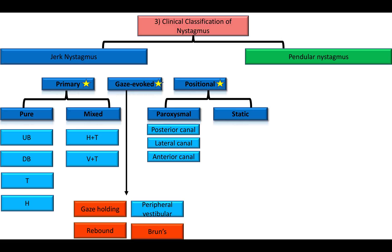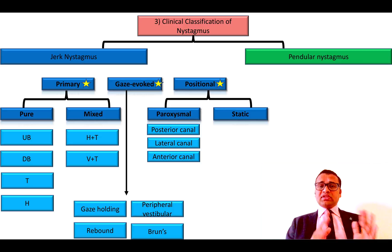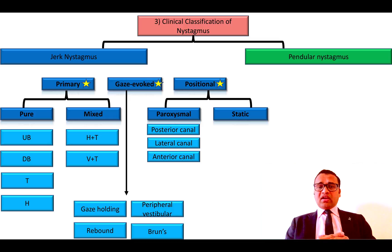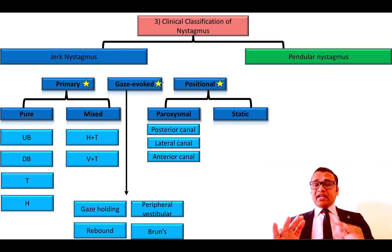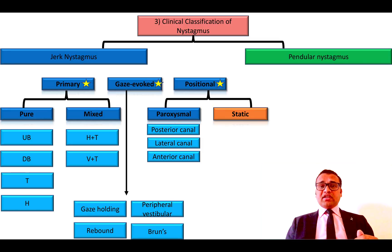Sometimes central vestibular nystagmus could be unidirectional in case of fascicular involvement of the vestibular nerve in multiple sclerosis. If the positional nystagmus is paroxysmal, the most common cause is benign paroxysmal positional vertigo, seen in pathologies of different canals — a peripheral variety. If the positional nystagmus is static or not fatigable, then it is of central origin.